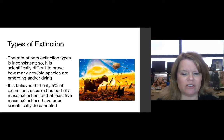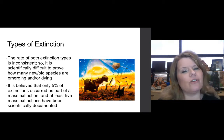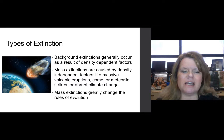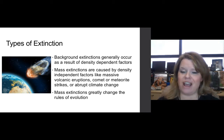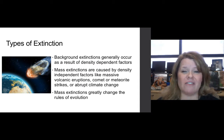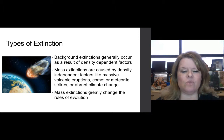We know at least five mass extinctions have occurred geologically and have been scientifically documented — including the non-avian dinosaur extinction at the end of the Cretaceous period. Background extinctions occur generally as a result of density-dependent factors, while mass extinctions are caused by density-independent factors like massive volcanic eruptions, meteorite strikes, and abrupt climate changes. You should expect a mass extinction event to greatly change the rules of evolution — and they do.